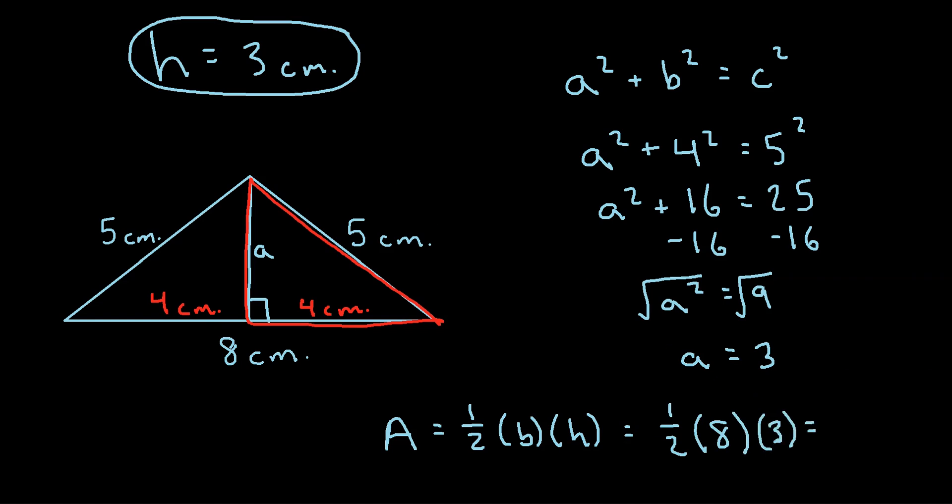So we get 8 times 3, that's 24, half of 24 is 12. So 12 centimeters, and we would say squared since we're talking about area.